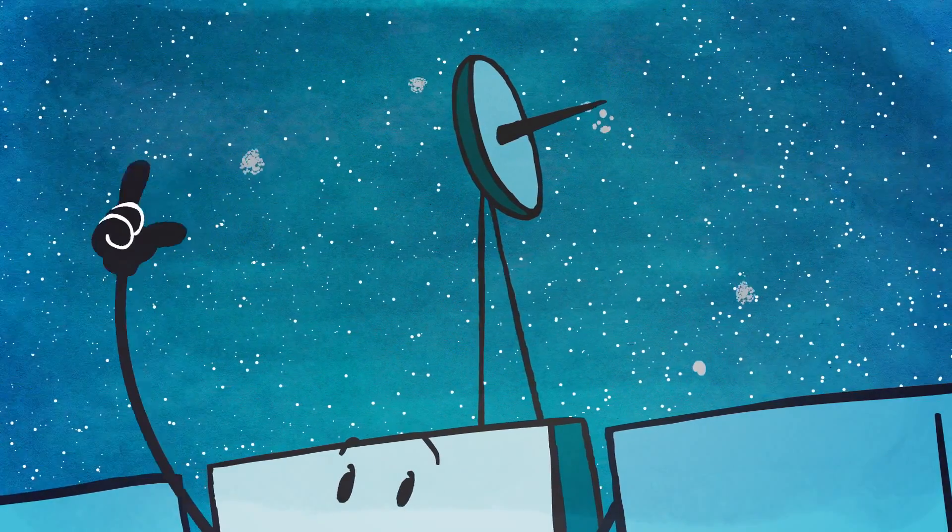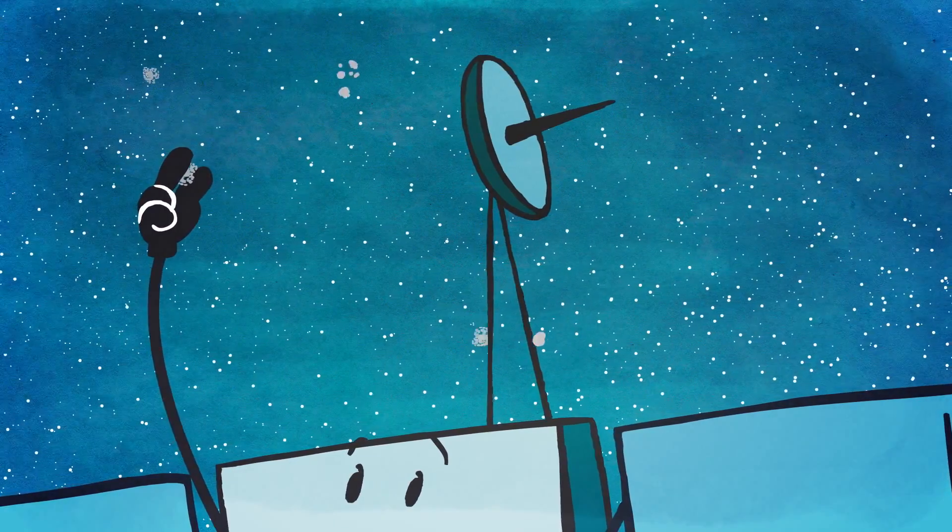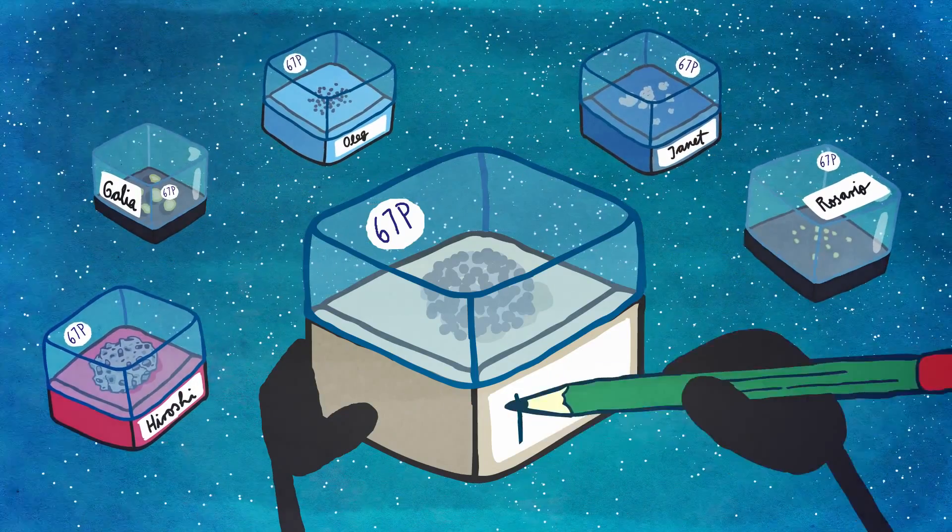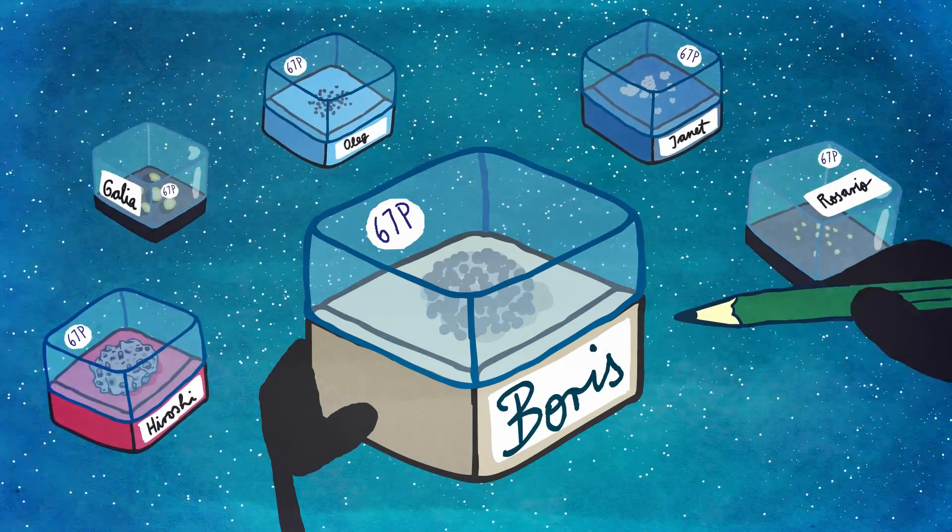Rosetta also collected thousands and thousands of dust grains, small and large. Some of them seemed very fluffy, like the head of a dandelion.